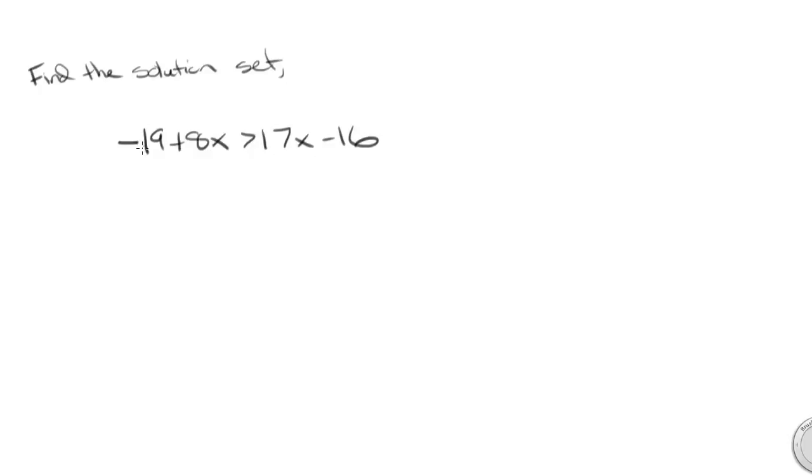What I'm going to do is consolidate the variables 8x and 17x by subtracting 17x from both sides of the inequality. I do that to cancel out this 17x right there.